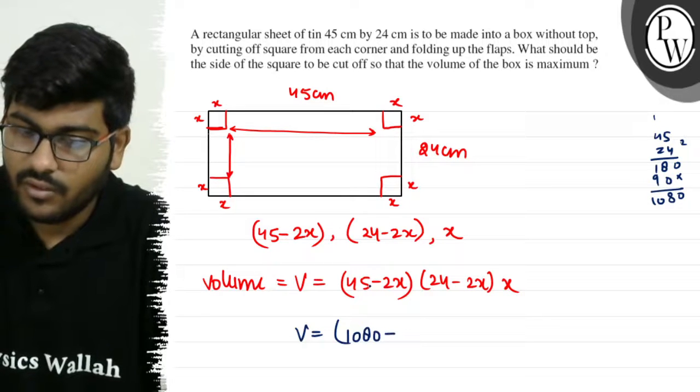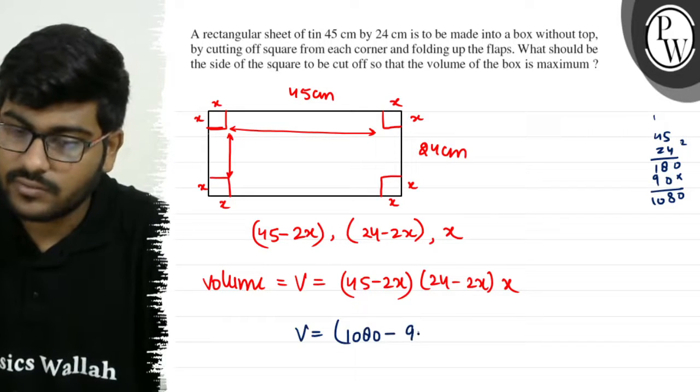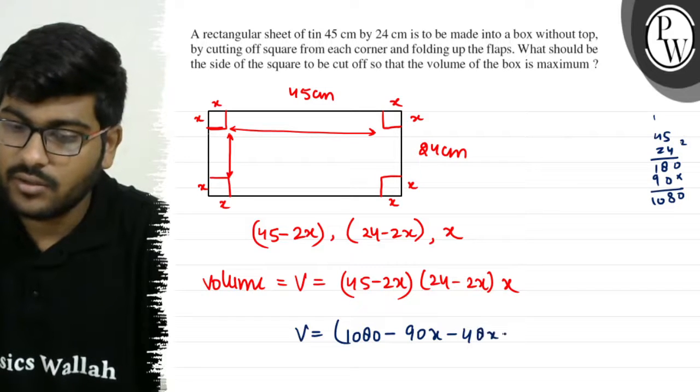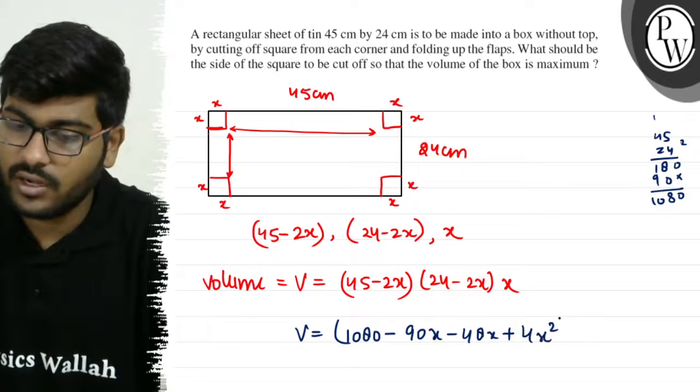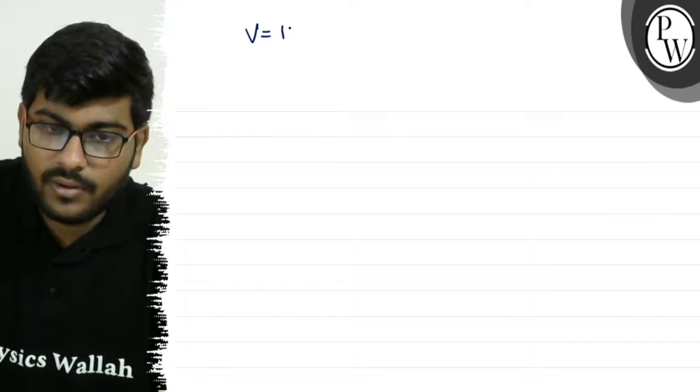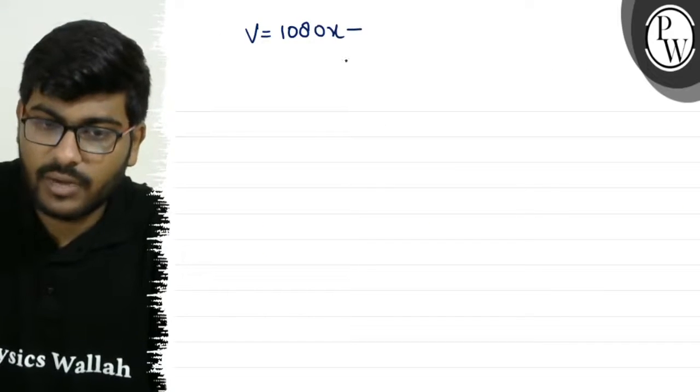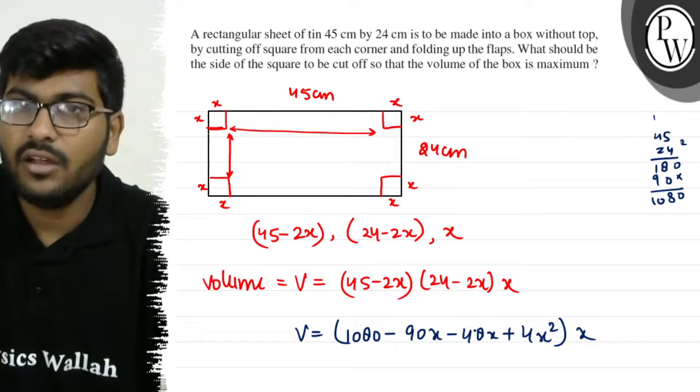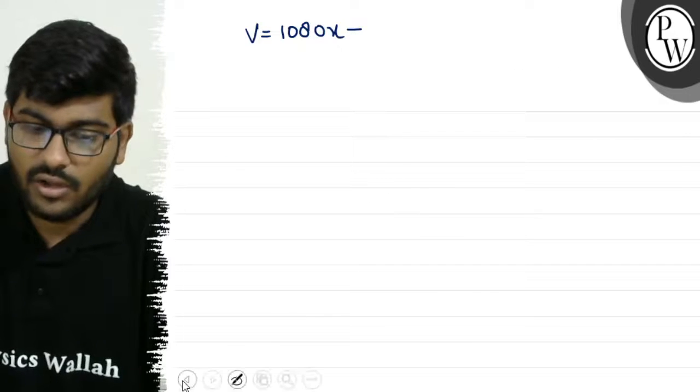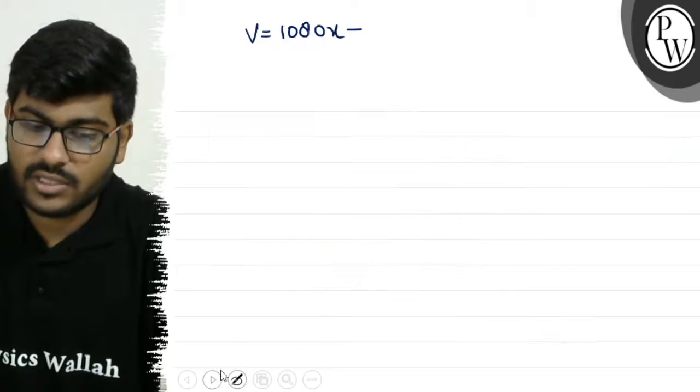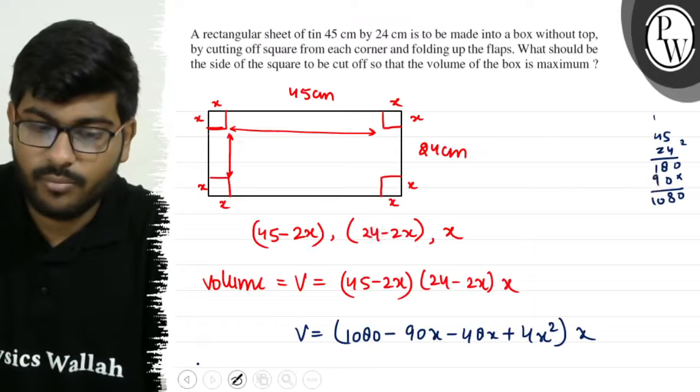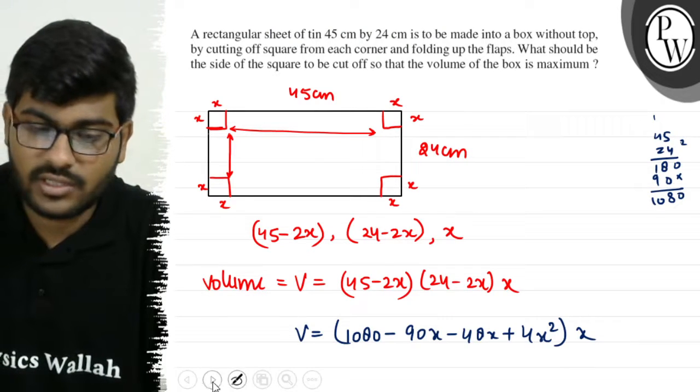45 into 2 is 90x, 24 into 2 is 48x, plus 4x² into x. So V is 1080x minus 138x² plus 4x³. This is our V.